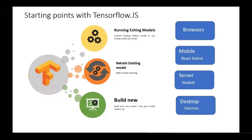For desktop, ML is possible using Electron, which is open source from GitHub. Many applications are built on Electron — Visual Studio Code being one of the most famous examples. The advantage of a desktop application is that you get an executable version: just click and go. All of this comes with the existing JS framework, making it easy to build models using Keras.